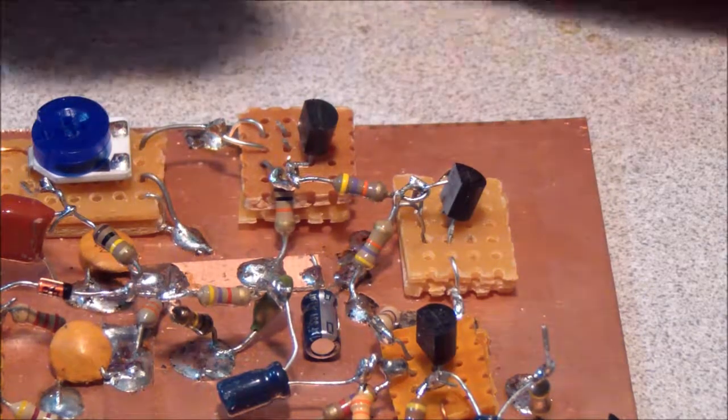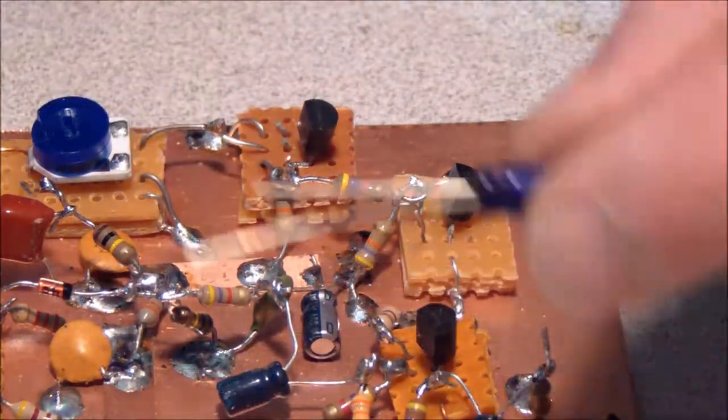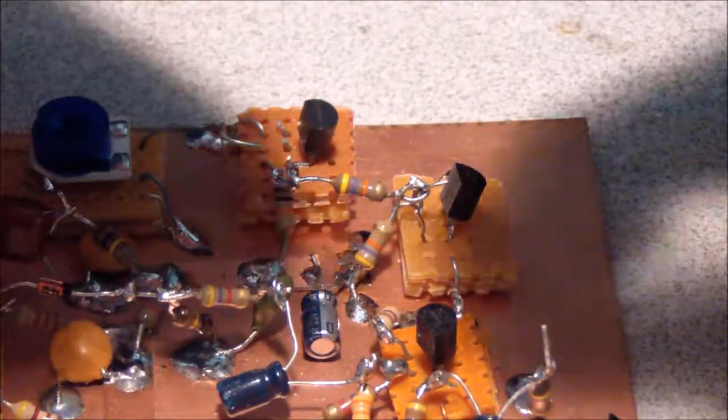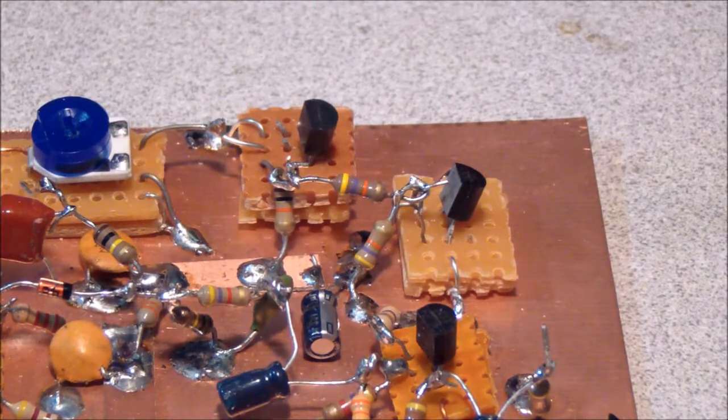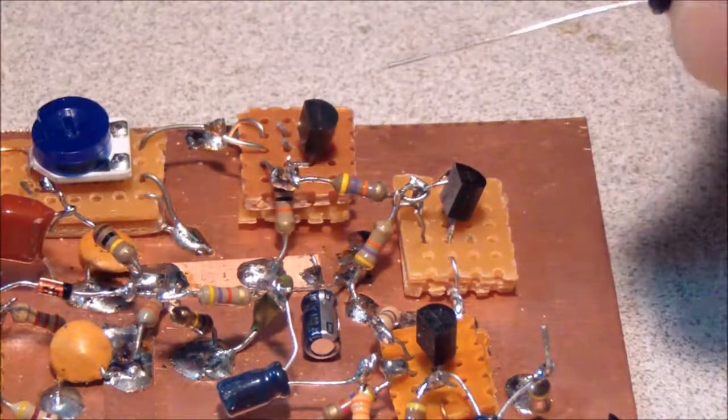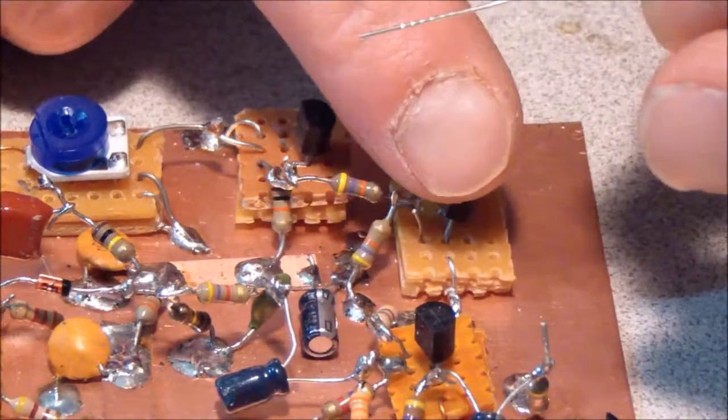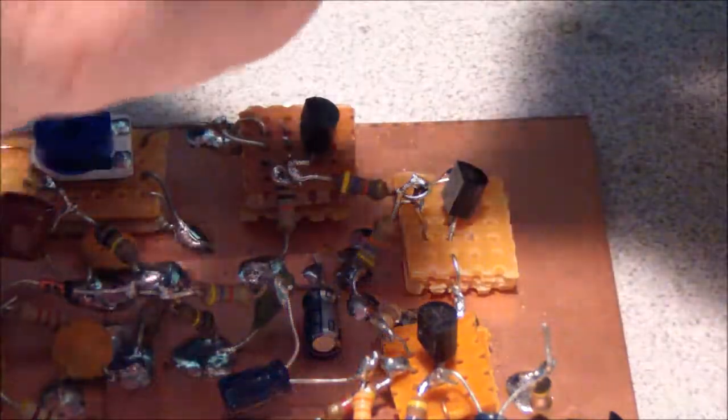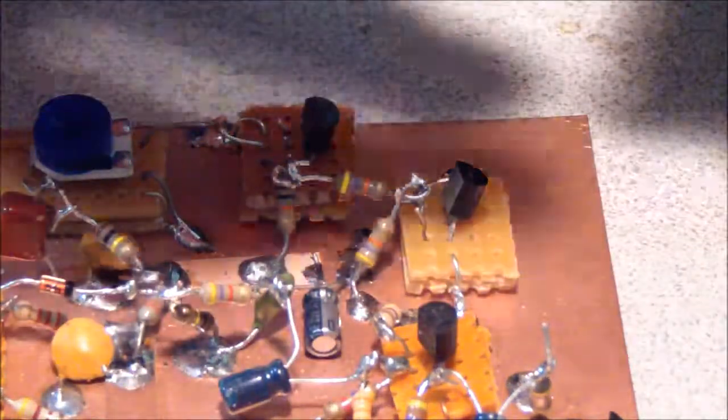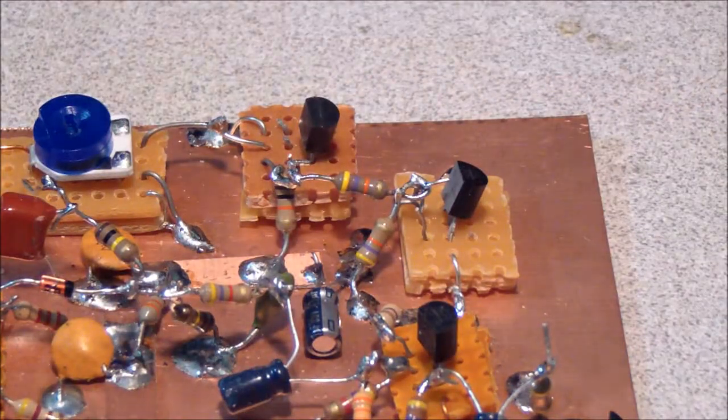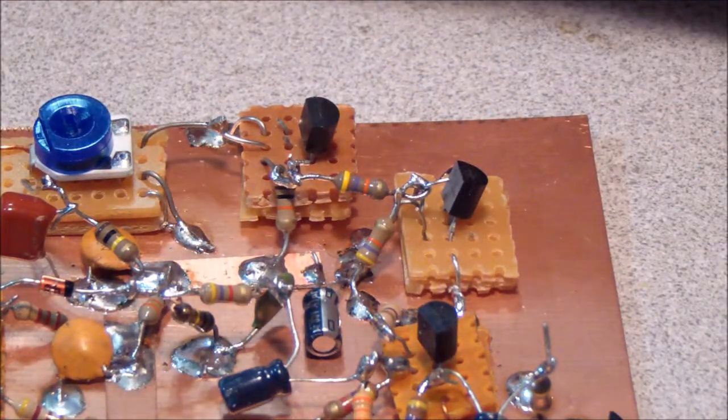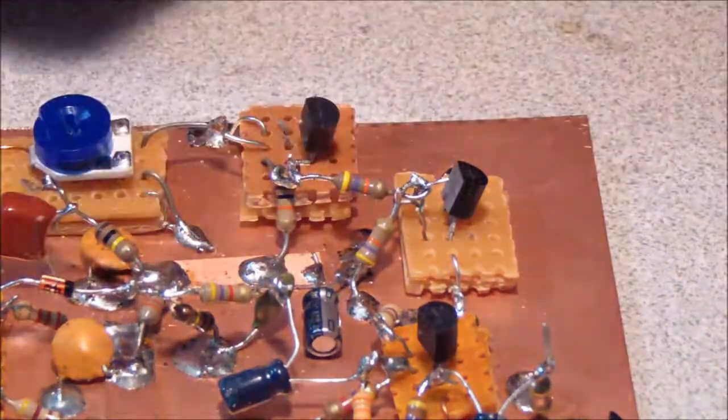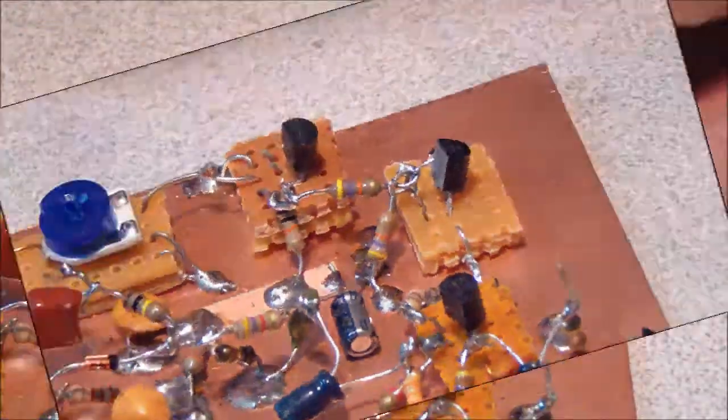And then we have a capacitor. This is a 33 microfarad capacitor. And it's going to go from the base lead of our second stage to ground. And this capacitor provides a little bit of a delay in the AGC action so that it doesn't rapidly cut in and out, which would be a little bit annoying.